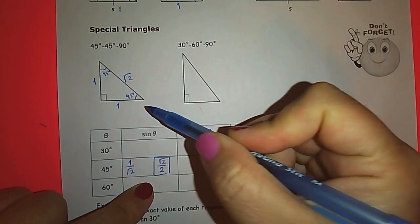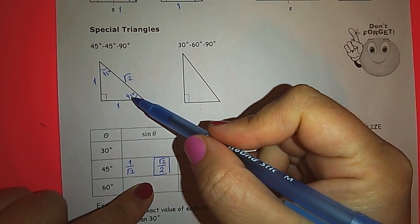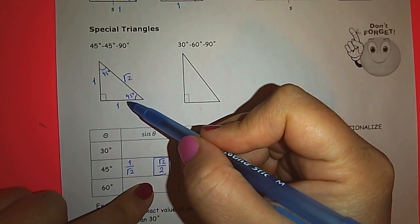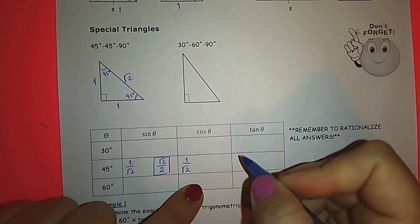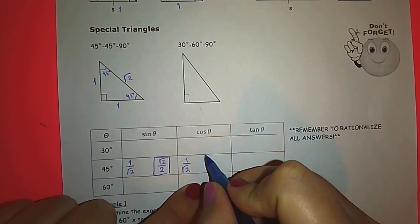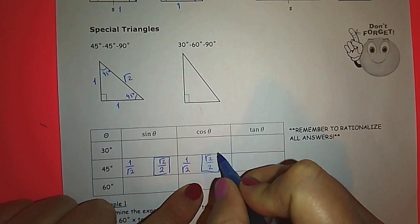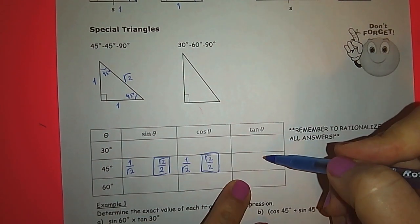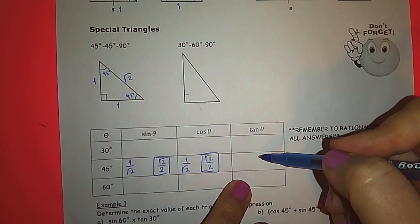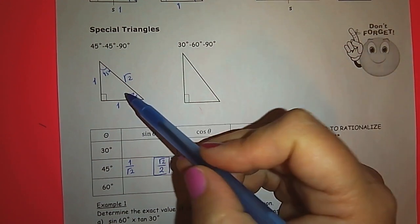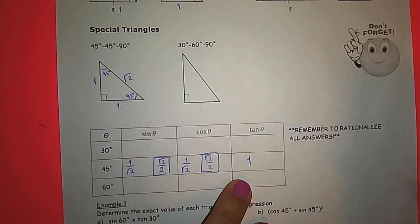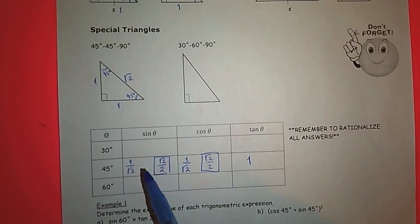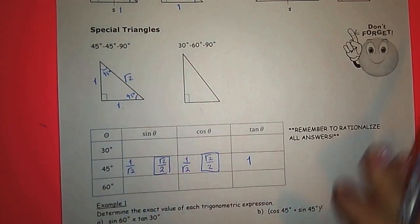Now let's look at the cosine ratio of 45 degree. Cosine is adjacent over hypotenuse. Adjacent is 1, hypotenuse is root 2, so 1 over root 2, which we rationalize to root 2 over 2. These values are the exact ratios for 45 degree.